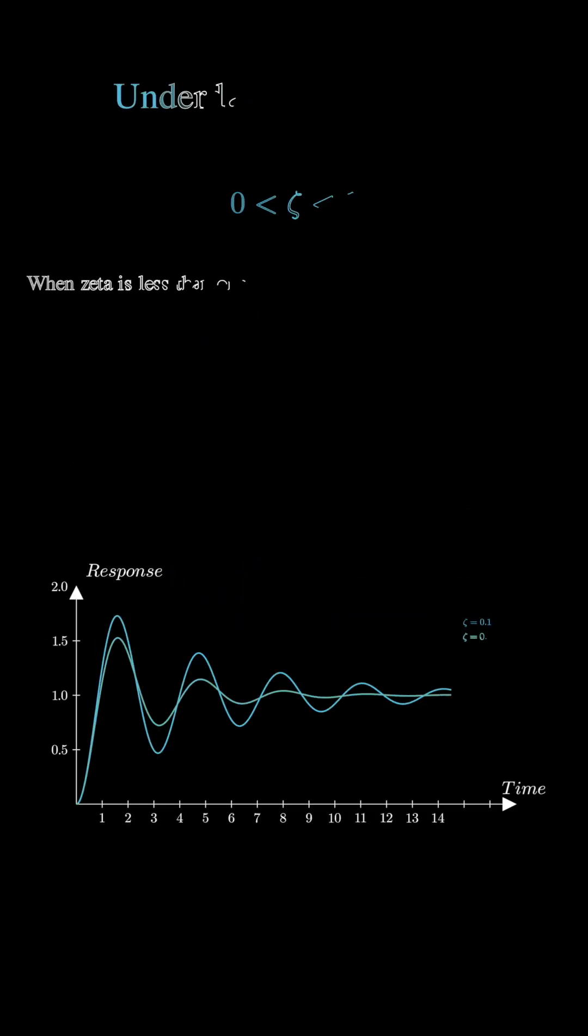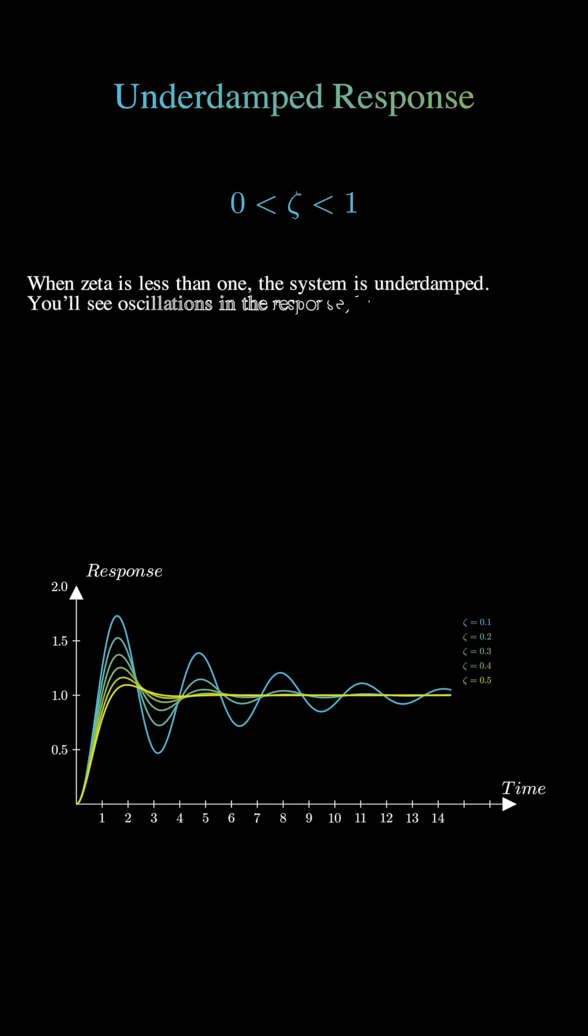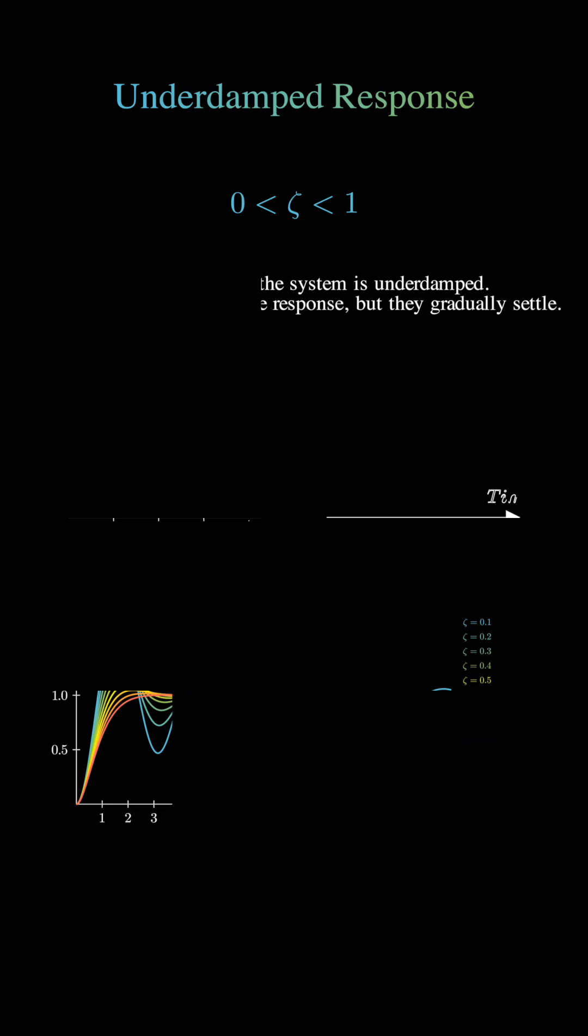When zeta is less than 1, the system is underdamped. You'll see oscillations in the response, but they gradually settle. The smaller the zeta, the more pronounced the oscillations.